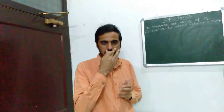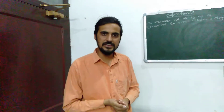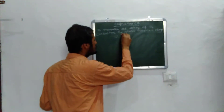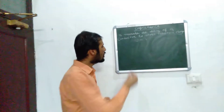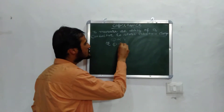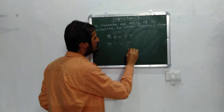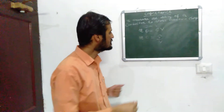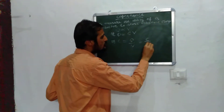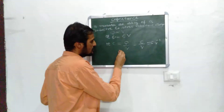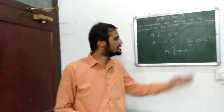Capacitance is a scalar quantity. Consider a conductor having charge Q and potential difference V. The charge Q is directly proportional to V, so Q is equal to CV, where C stands for capacitance. Therefore, C is equal to Q upon V. Its unit is coulomb per volt, or farad (F).